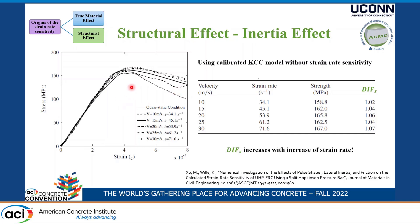Using this validated model in LS-DYNA with no strain rate sensitivity assigned, and running split Hopkinson bar simulations at increasing striker velocities and thus increasing strain rates, we can see using the standard bar equations how the material appears stronger — but this is entirely due to the structural effect, i.e., radial inertia. The dynamic impact factor due to the inertia structural effect increases to about 7% at a given strain rate and continues increasing with strain rate.